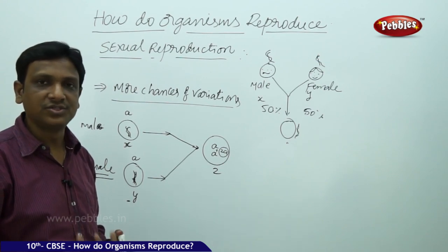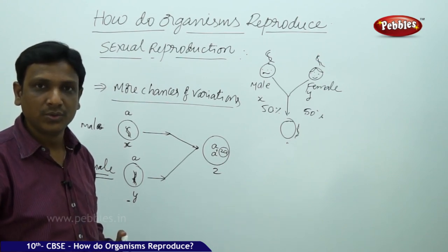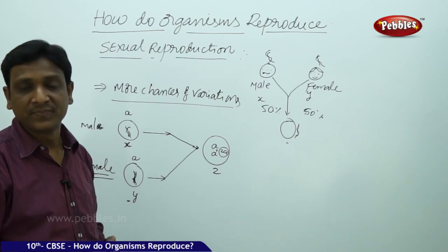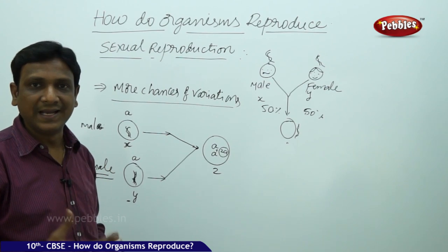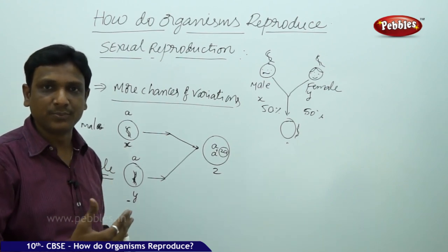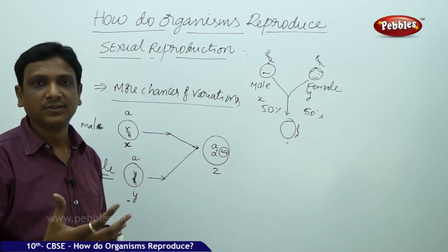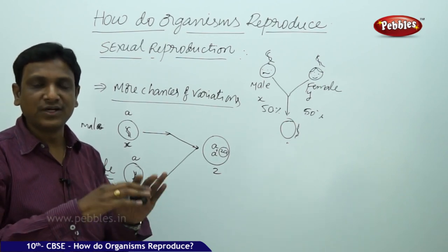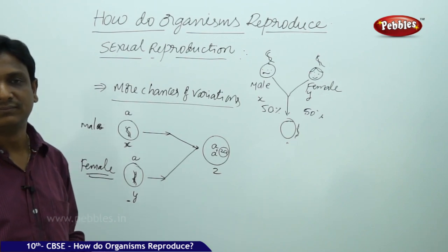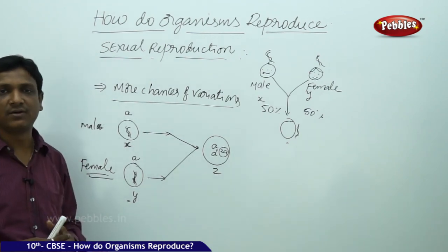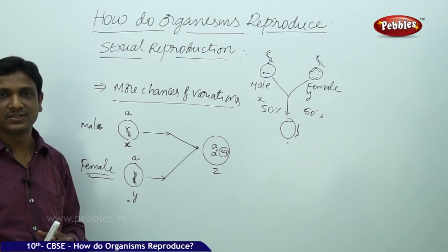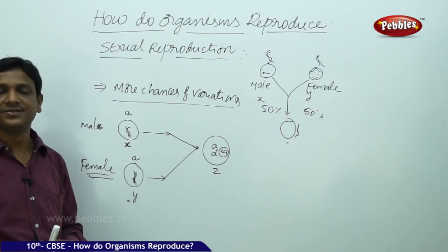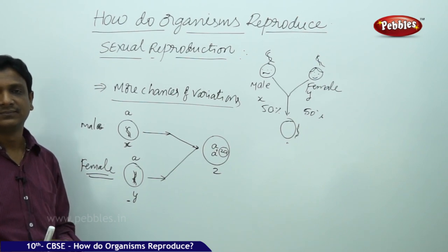In such a case, your children would have double than you, and the next generation would have double than them. If this happened at every stage of sexual reproduction, the amount of chromosomes would keep doubling, and the total planet would be filled up with genetic material. But it is not happening.